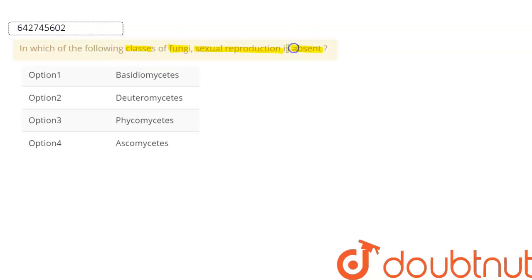Now we know that sexual reproduction is a characteristic of fungi, but it is absent in only one group of fungi which are called fungi imperfecti. Do you know which group that is? It is actually your deuteromycetes.